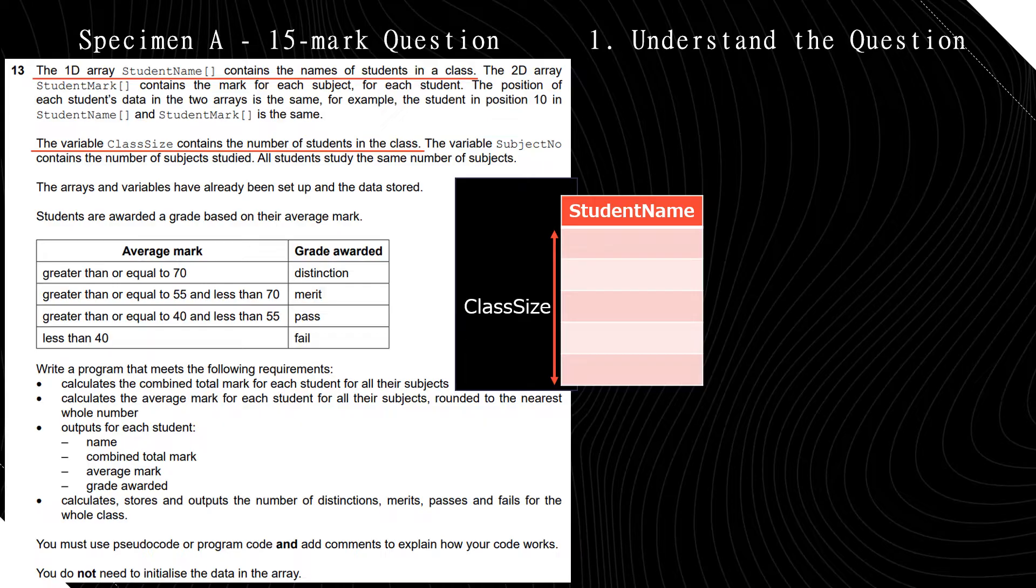So the question reads: the one-dimensional array student name contains the names of students in a class. The 2D array student mark contains the mark for each subject for each student. The position of each student's data in the two arrays is the same. The variable class size contains the number of students in the class. The variable subject number contains the number of subjects studied. All students study the same number of subjects.